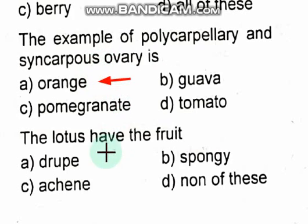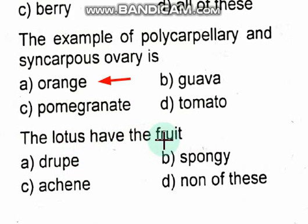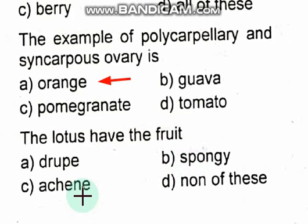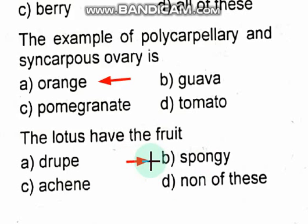The lotus has which type of fruit? Options are drupe, etaerio, achene, or none of these. The right option is etaerio.